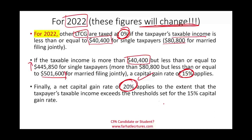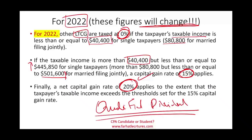These same 0%, 15%, and 20% percentages also apply to qualified dividends. So when we talk about qualified dividends specifically, they're taxed at 0%, 15%, or 20%, depending on your taxable income and filing status.